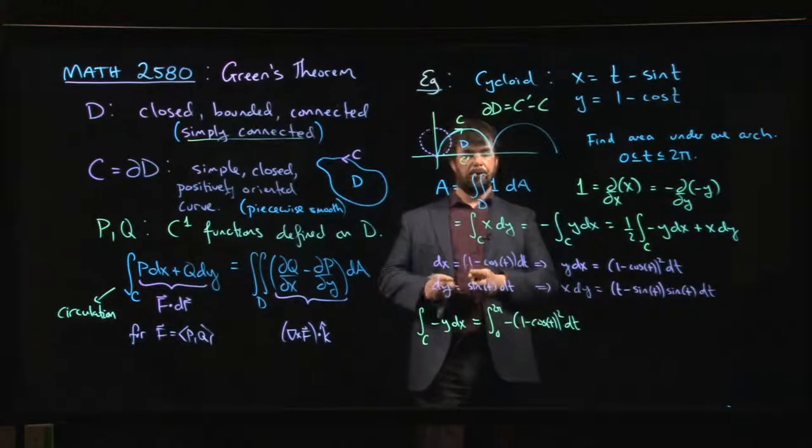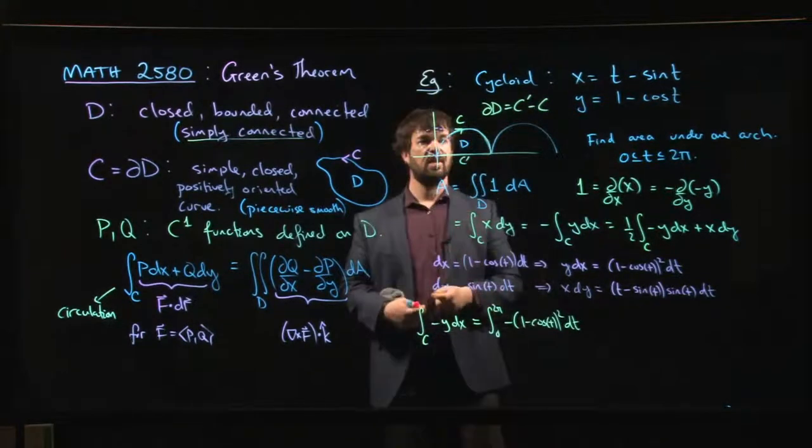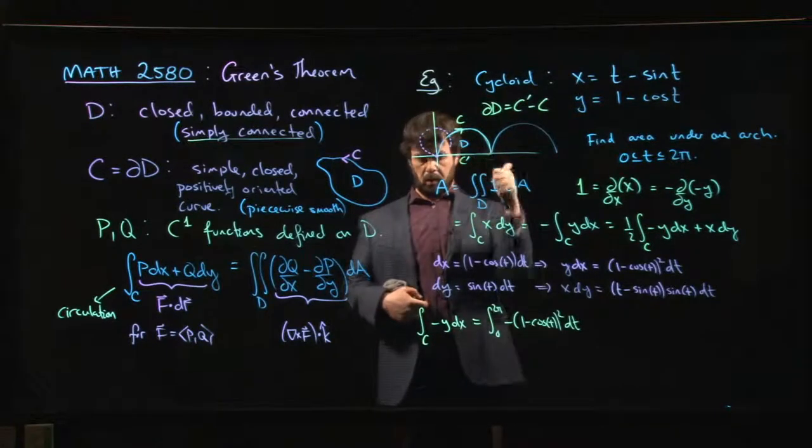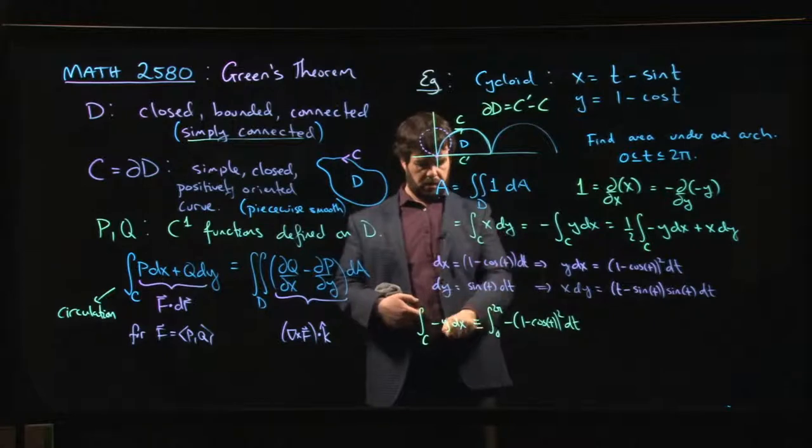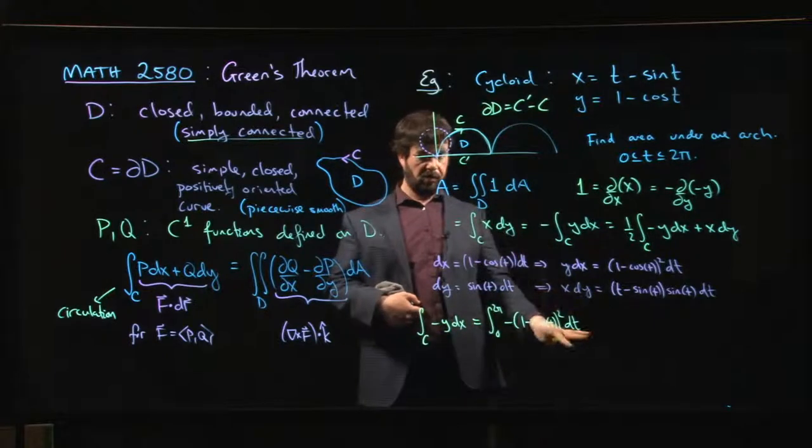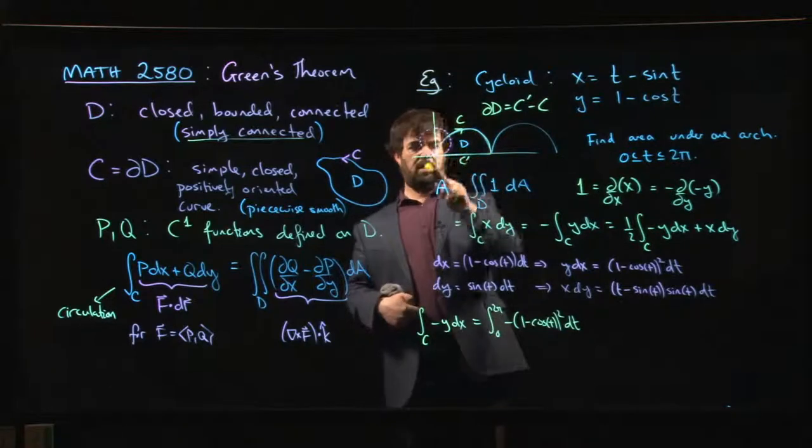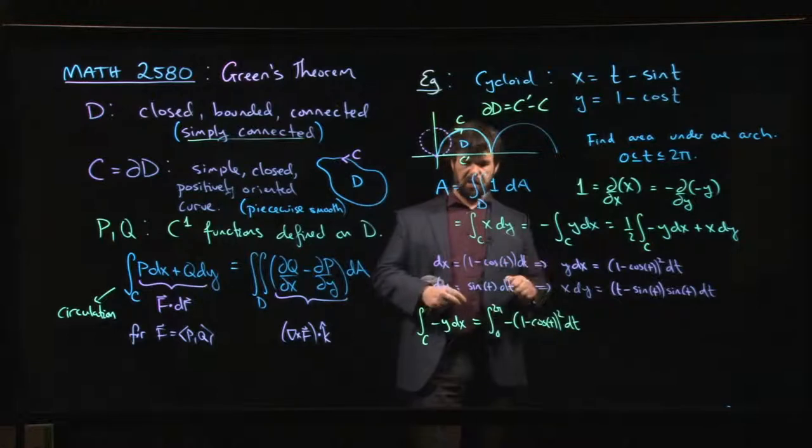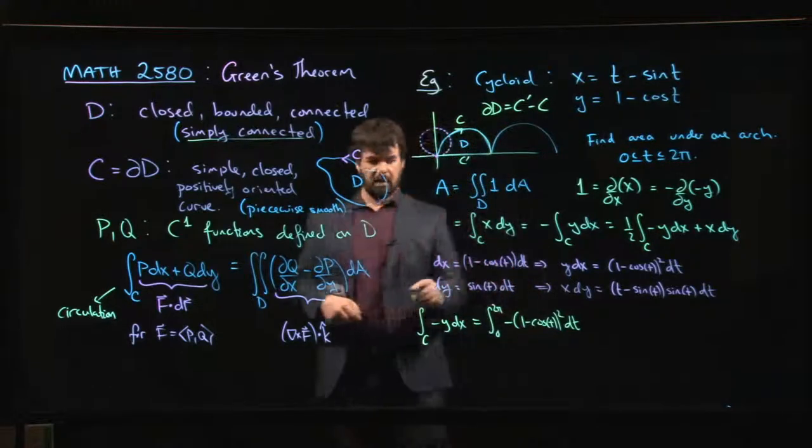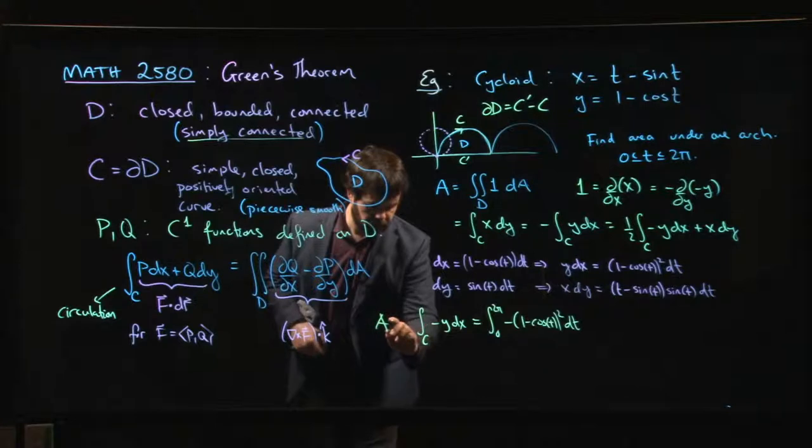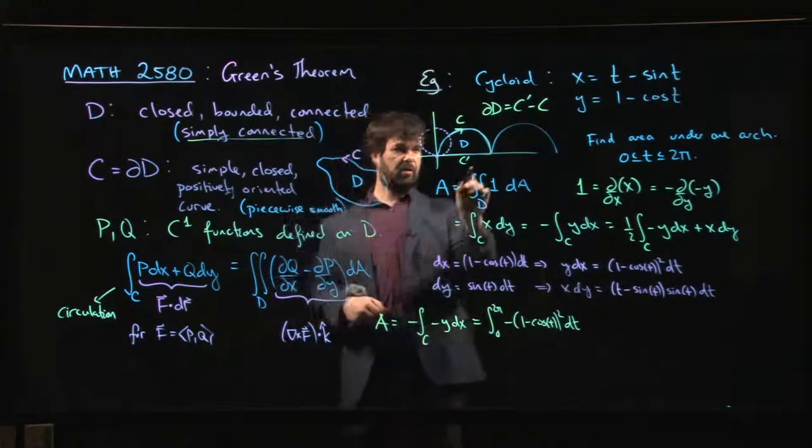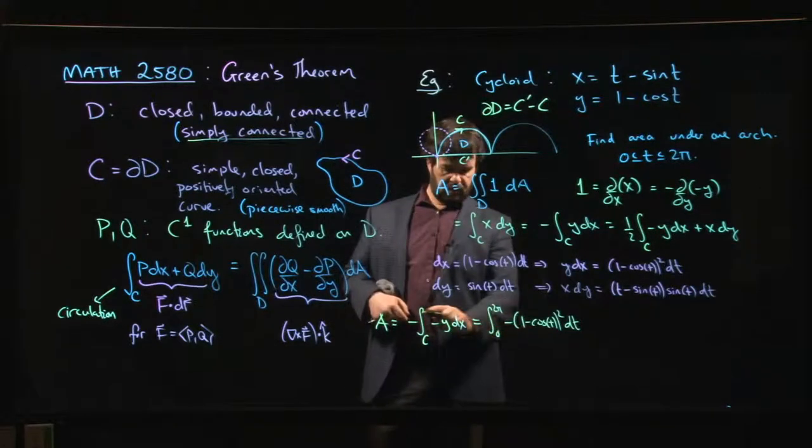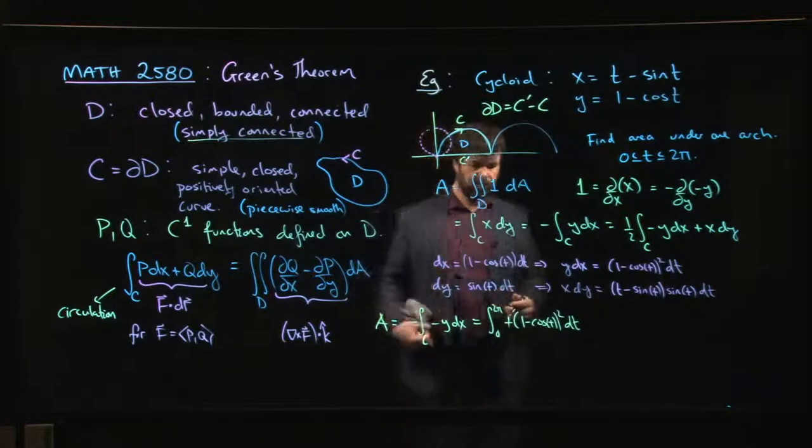Now that saves us because the integral along c prime, y is 0 there, so it doesn't contribute to the integral. Only this part does. That's good. That means the area we want isn't this integral along c, the area we want is the negative of that integral because we want to go the wrong way around c. So those two negatives cancel, give me a positive.